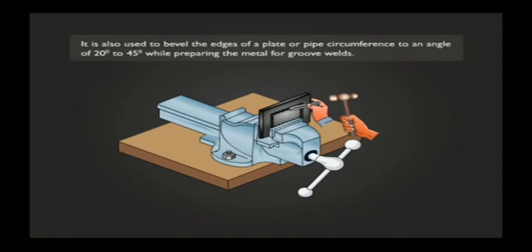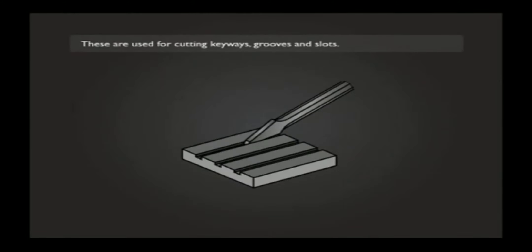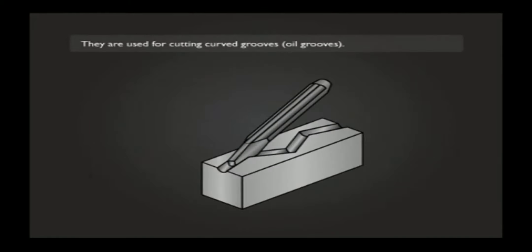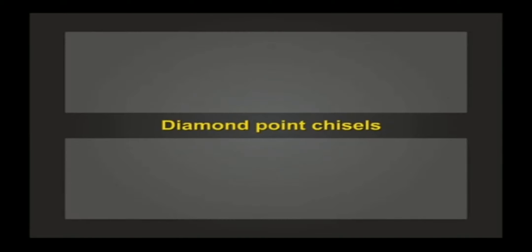Cross cut or cape chisels are used for cutting keyways, grooves and slots. Half round nose chisels are used for cutting curved grooves and oil grooves.